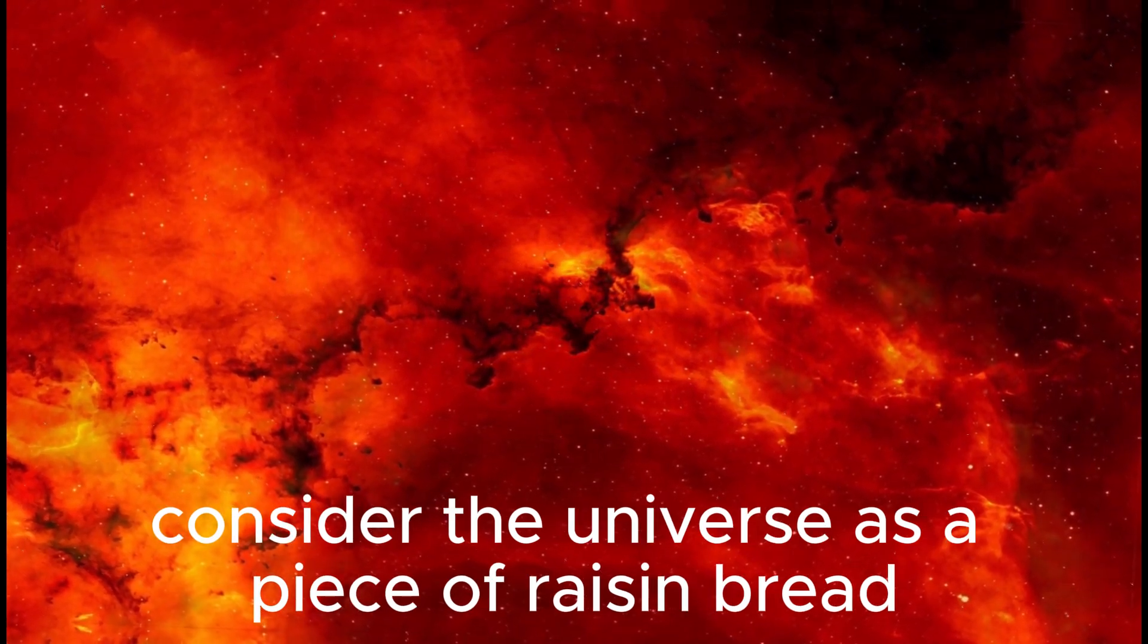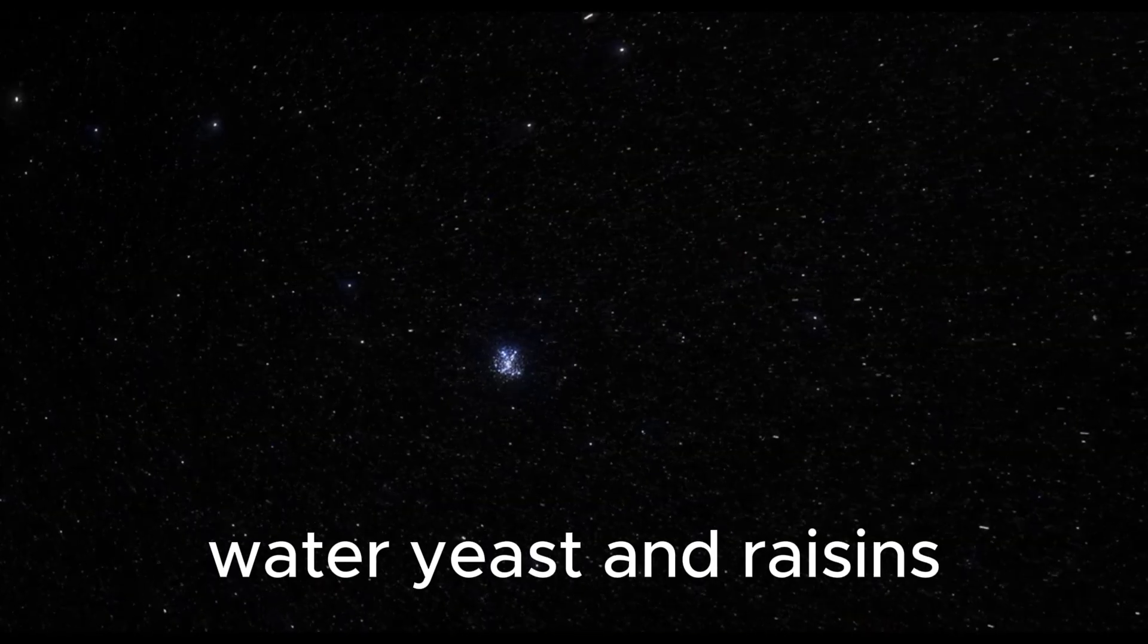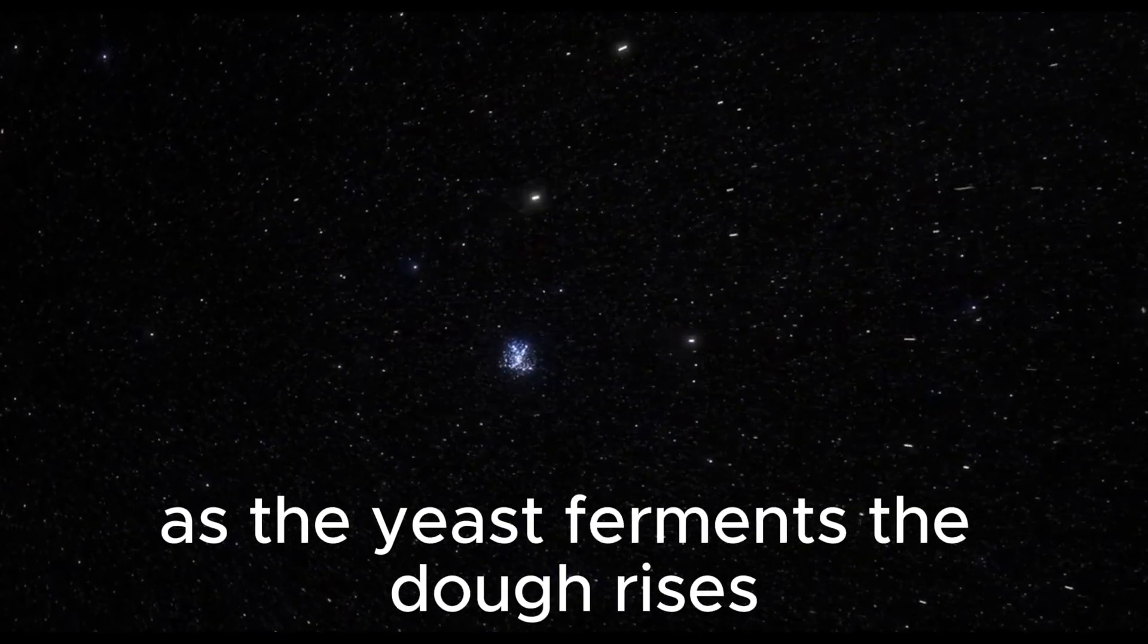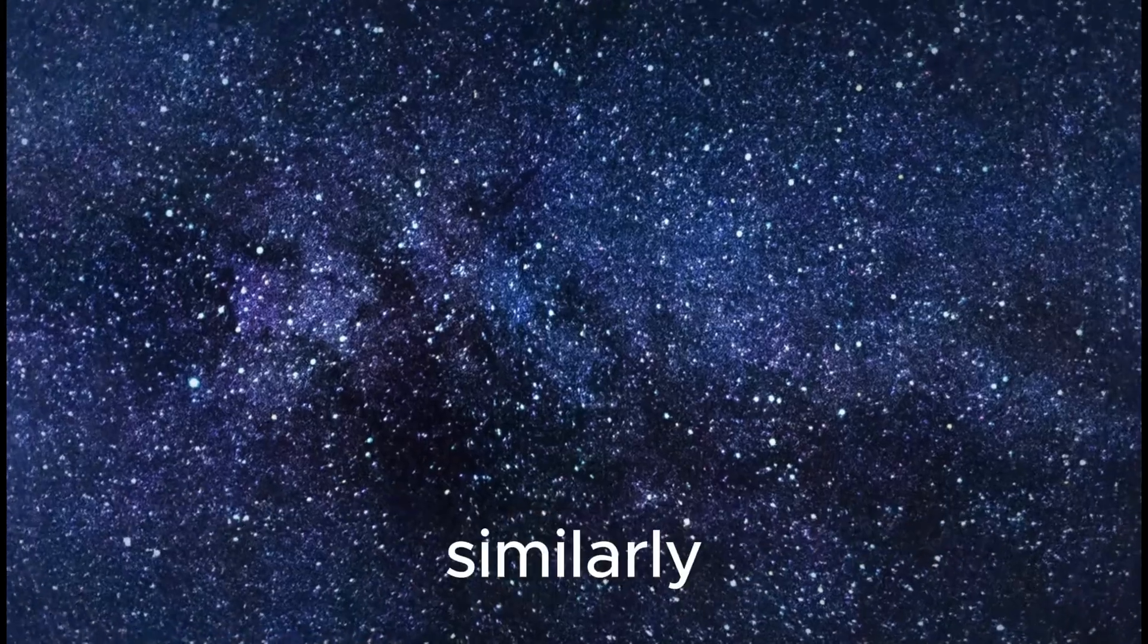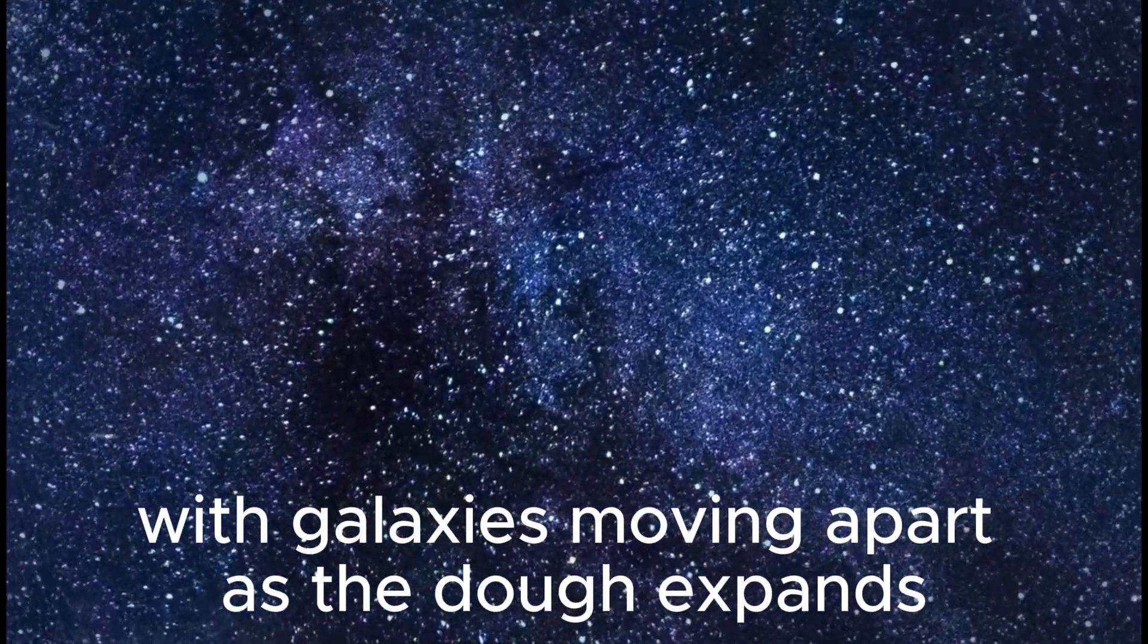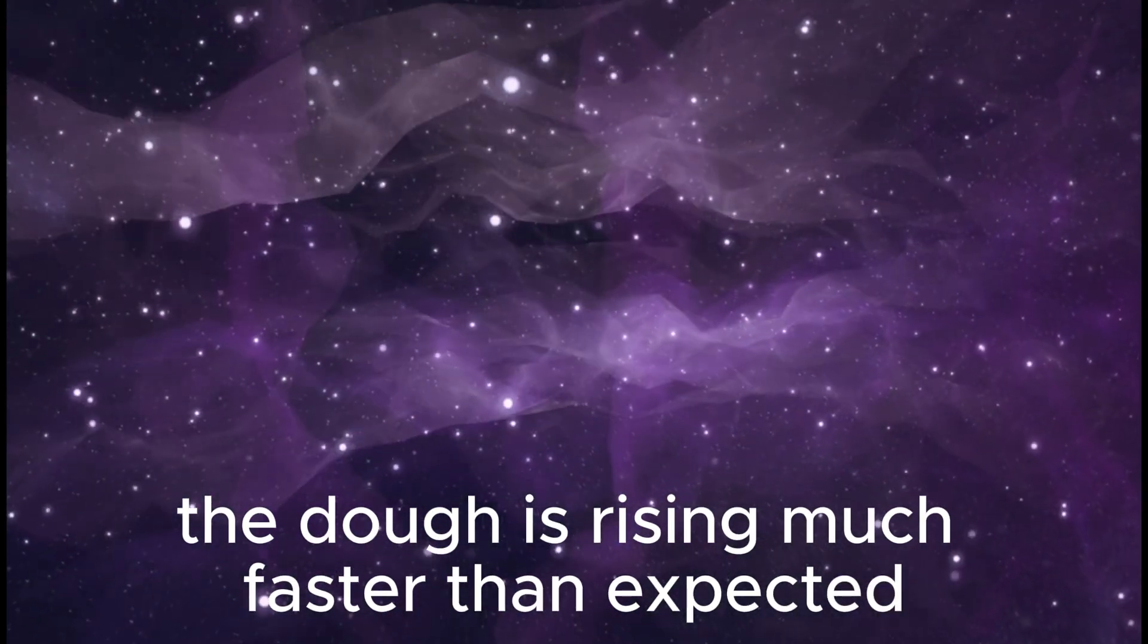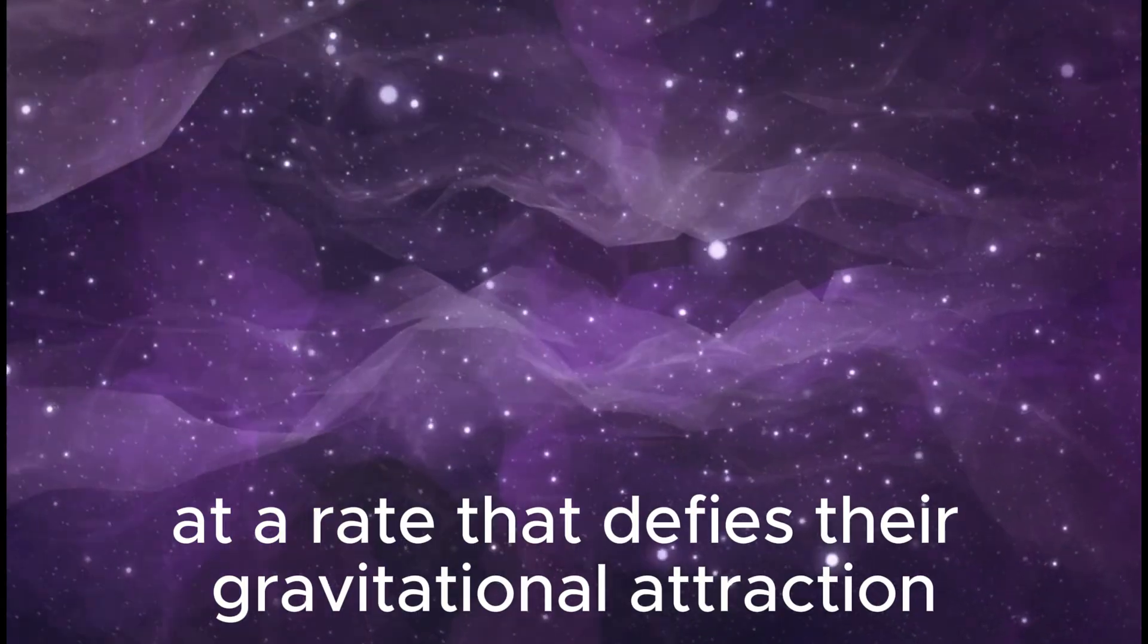Consider the universe as a piece of raisin bread. It starts as a mixture of flour, water, yeast, and raisins. As the yeast ferments, the dough rises, causing the raisins to move further apart. Similarly, the universe's expansion is like the rising dough, with galaxies moving apart as the dough expands. The Hubble Telescope observed that the dough is rising much faster than expected, with galaxies moving apart at a rate that defies their gravitational attraction.